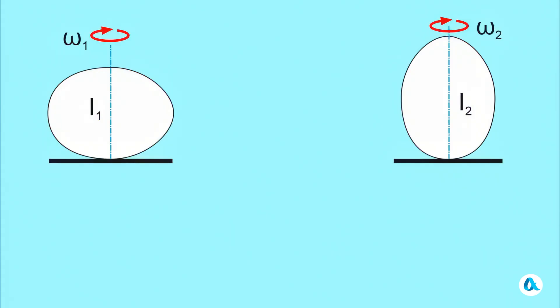Now, suppose the egg didn't rub against the table, then its angular momentum L should be conserved. At the start, it was equal to I1 times omega 1. And when the egg stood upright, it became equal to I2 times omega 2. And since I1 is greater than I2, that means omega 2 is greater than omega 1, the egg started spinning faster, just like a figure skater pulling in their arms.